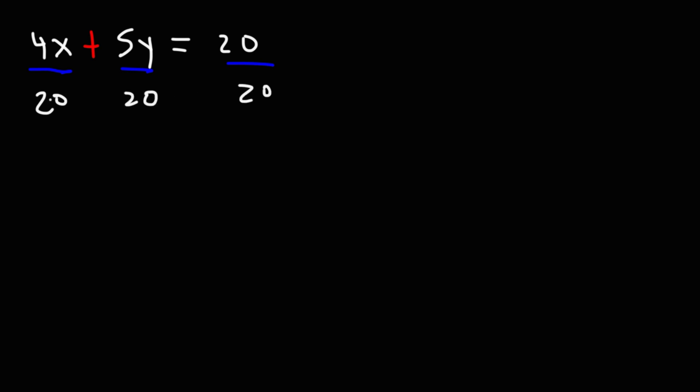Now, dividing it backwards, we have 20 divided by 4 is 5. And 20 divided by 5, that's 4. And here we have 20 divided by 20, which is 1. So now, it's in intercept form.